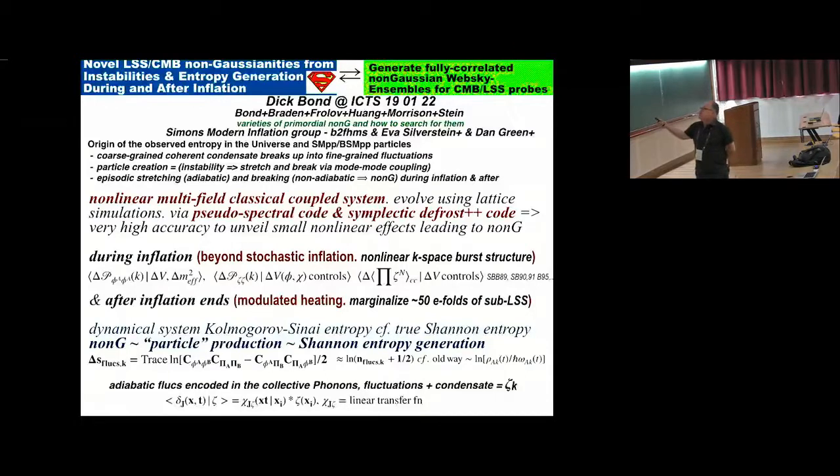I've worked on this topic with a large number of people at CITA, and the subtext is varieties of primordial non-Gaussianity and how to search for them. We have a group that's funded by the Simons Foundation. We are called the modern inflation people. The people that do bounces somehow do not have modern in their title. Anyway, that was a joke. So it's us, and then Eva Silverstein has a different way of trying to go after it.